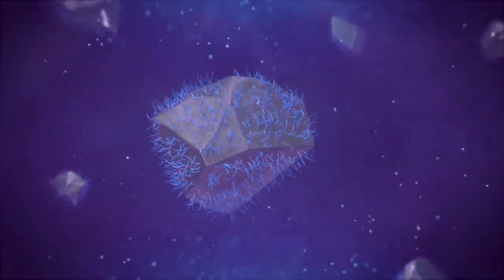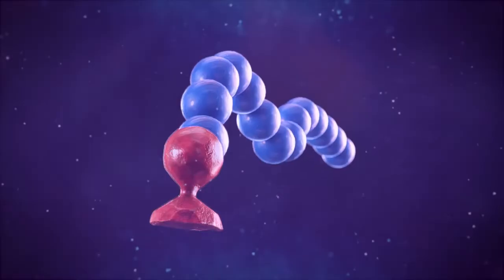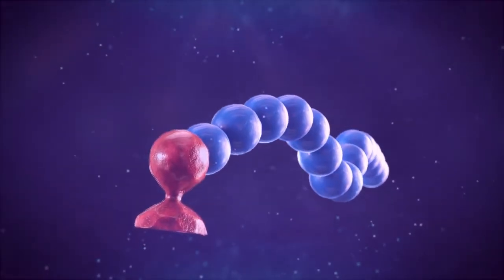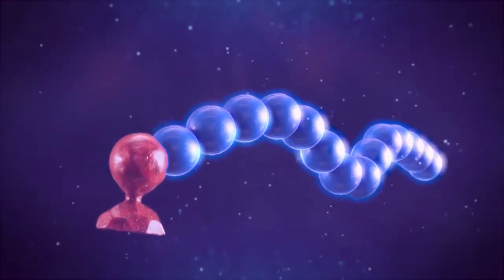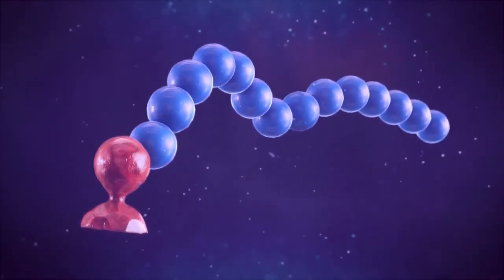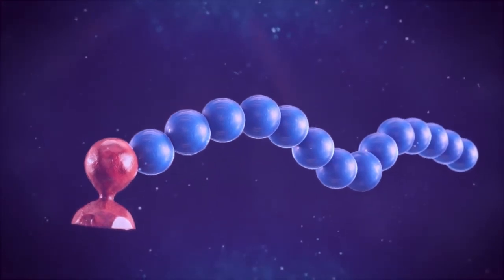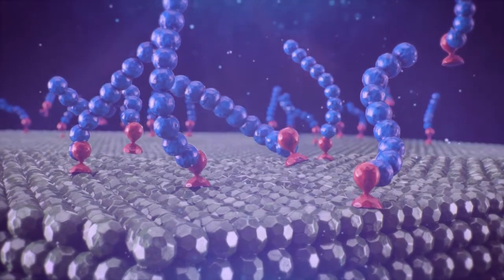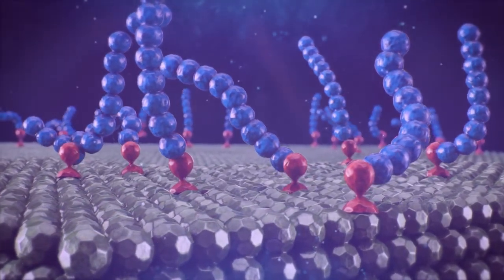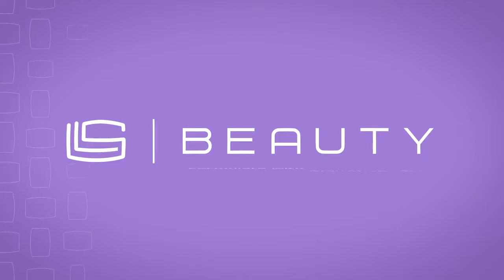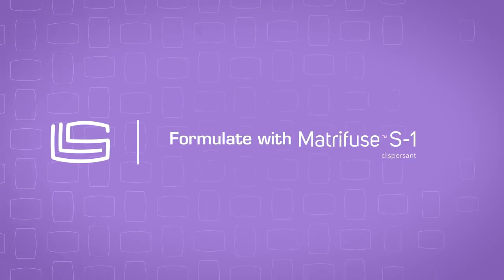This is made possible because of the two parts of a dispersant: an anchoring segment that absorbs onto the pigment, and a polymeric chain that creates a steric barrier that stabilizes the dispersant. It is the particular combination of the anchoring group and polymeric chain which leads to the effectiveness of the dispersant.